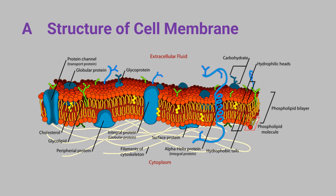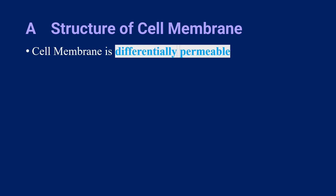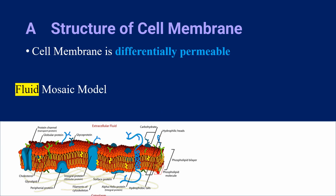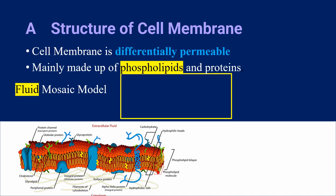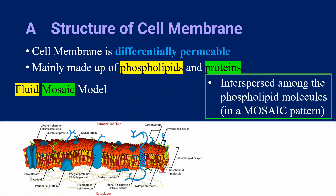To begin with, we have to look at the overall structure of the cell membrane, as it is quite difficult to understand how substances move across the cell membranes without knowing the structures. Cell membrane is differentially permeable, meaning it only allows certain substances to pass through. According to the fluid mosaic model, cell membrane is mainly made up of phospholipid molecules, which are arranged in a bilayer and can move laterally like a fluid, and proteins, which are interspersed among the phospholipid molecules in a mosaic pattern.